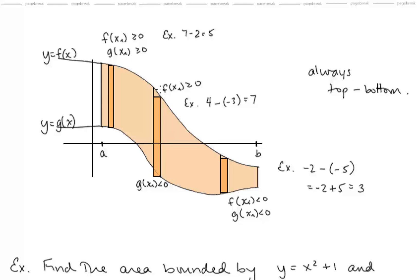Let's check: if f of x is positive and g of x is negative — say height 4 and height negative 3 — then 4 minus negative 3 gives us 7, the positive distance we need. Similarly, if both function values are negative — say negative 2 and negative 5 — then negative 2 minus negative 5 equals positive 3, which is exactly the distance we need. So it's always top minus bottom when integrating with respect to x to find area between curves.